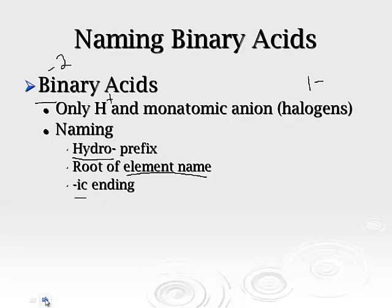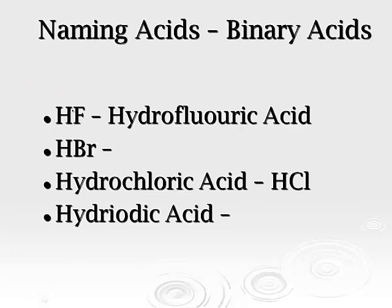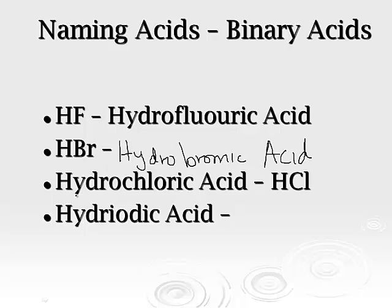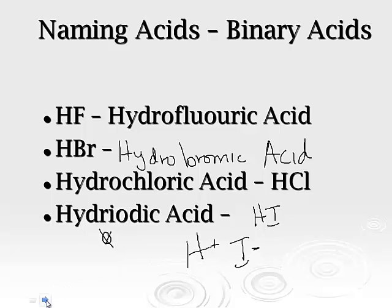Here are some examples: HF would be hydrofluoric acid. HBr is hydrobromic acid. Hydrochloric acid, going in the opposite direction, would be HCl. And hydriotic — notice we drop the O so we don't say hydroiotic — would be hydrogen ion and the iodide ion, HI. Those are binary acids.